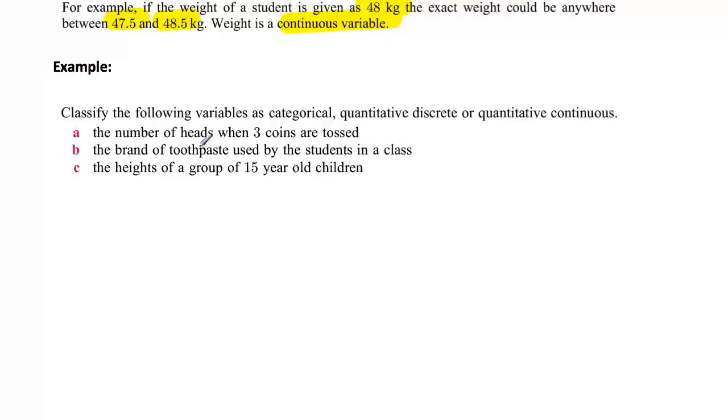In A, we're asked to classify whether it's categorical, quantitative discrete, or quantitative continuous. It's the number of heads when three coins are tossed. Well, these are counted. You can actually count these numbers. If they're counted, you would say that they would be exact values. They can only be exact values. That would mean that it would be quantitative, because there's a number attached. But is it continuous or is it discrete? In this case, because it's exact, we would have to say that it's discrete.